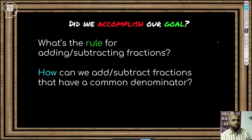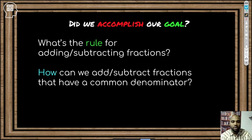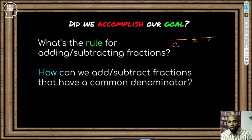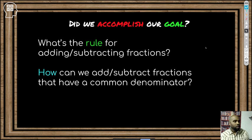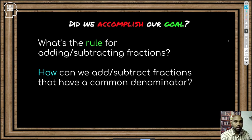That does it for us. The rule for adding and subtracting fractions with a common denominator: whether you're adding or subtracting, a over c plus or minus b over c — all you do is keep your denominator and add or subtract your numerators. That's all we were doing, and that really sums up how to handle either one. Thank you for tuning in — my name is Brandon Clayton, the Algebra Guy, and I will see you next lesson.